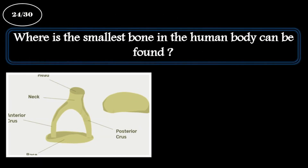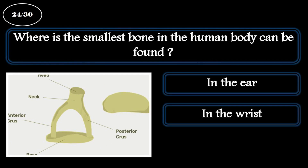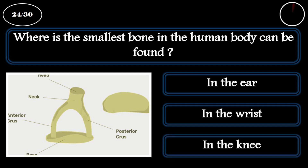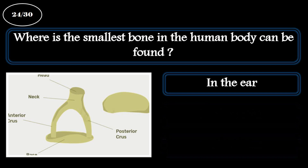Question 24. Where is the smallest bone in the human body found? A: In the ear. B: In the wrist. C: In the knee. The correct answer is in the ear.